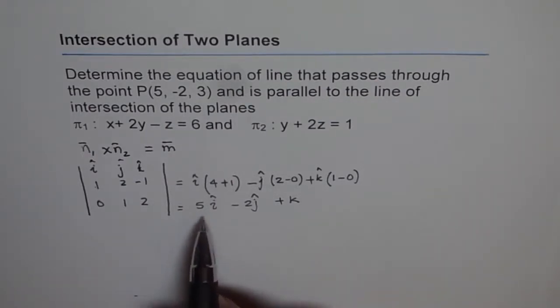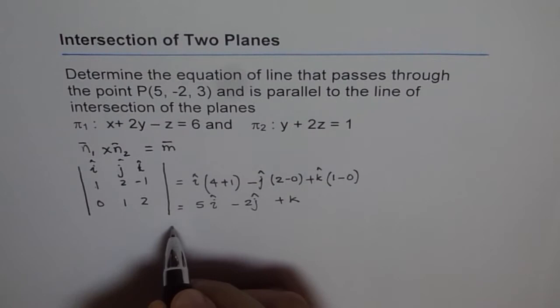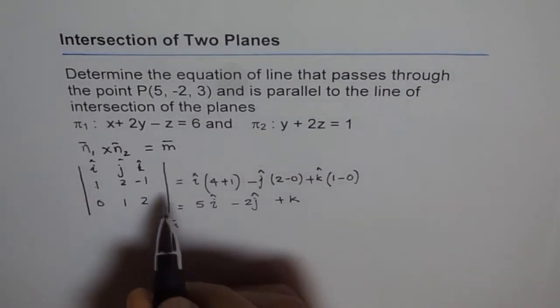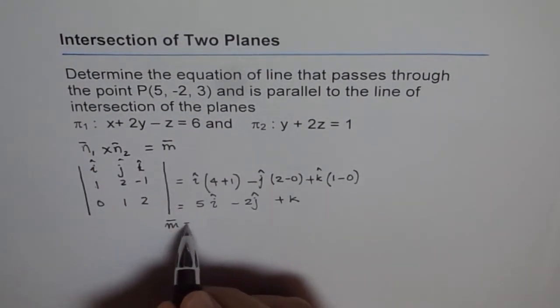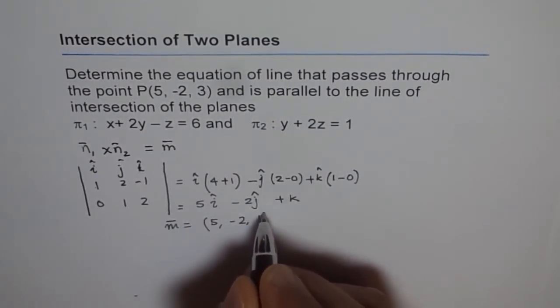And therefore we can write now from here that m is equal to, so we get m equals to, this is n1 cross n2, so we get m equals to 5, -2, 1. That's the direction vector of our line.